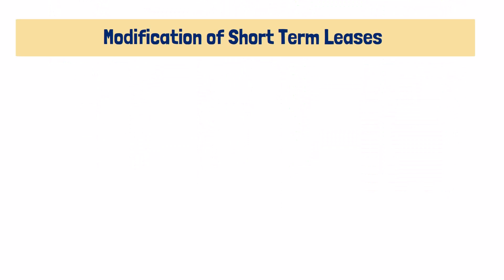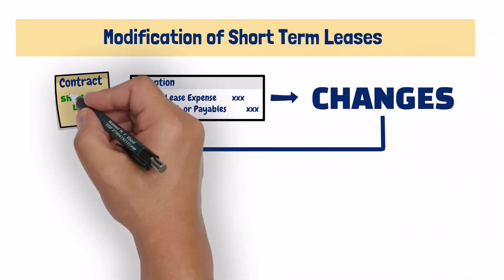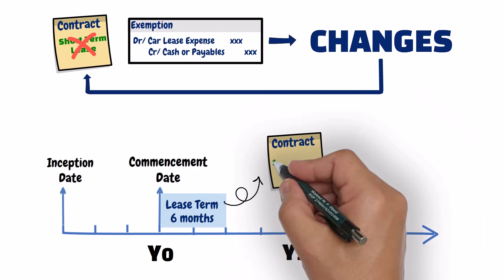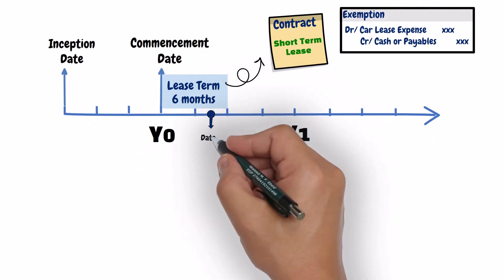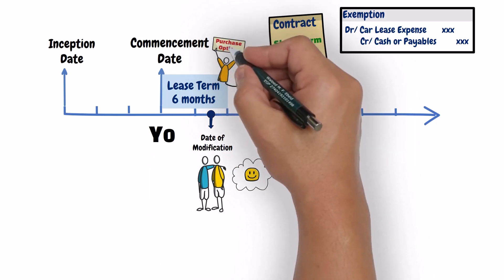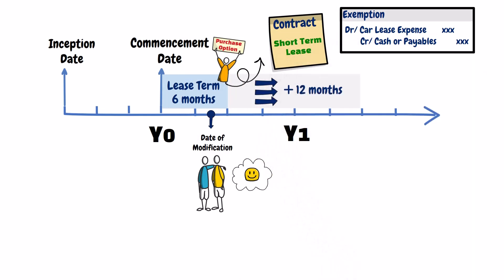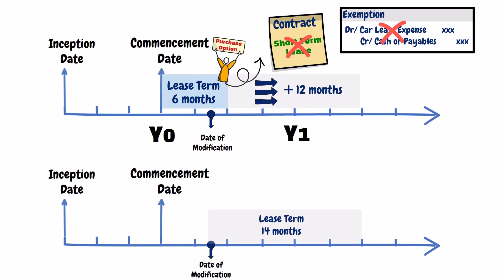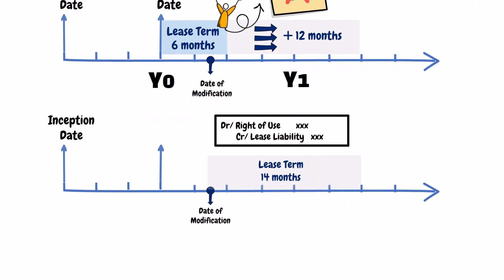What is the case if the lessee elects to apply the exemption for a short-term lease, then subsequent changes occur that make the lease no longer qualify as a short-term lease? Suppose a lessee leases a car for six months — clearly a short-term lease — and elects to apply the exemption. Then at the beginning of the fourth month, both the lessee and the lessor agree to modify the original terms by including a purchase option, or by increasing the lease term from six months to 18 months. In this case, the lease after modification is no longer a short-term lease, and the lessee should account for it as a new lease, recognizing a right-of-use asset and a lease liability. The commencement date for this new lease is the date of modification.